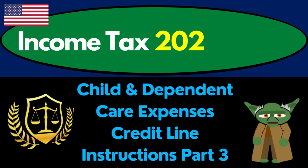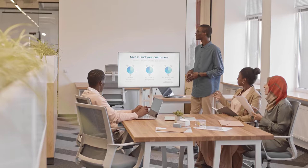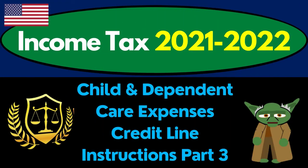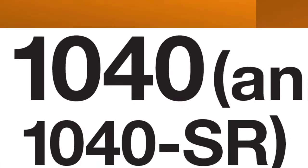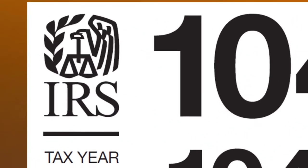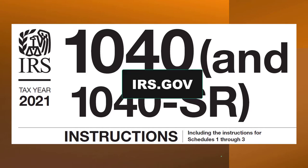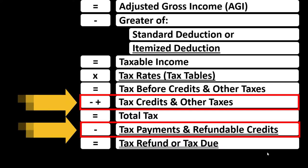Income Tax 2021-2022 Child and Dependent Care Expenses Credit Line Instructions Part 3. Diving into Income Tax 2021-2022, most of this information can be found in the Form 1040 Instructions Tax Year 2021, available on the IRS website at irs.gov. We're down here in the credit area of the income tax formula.